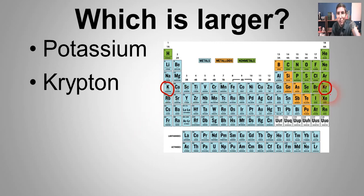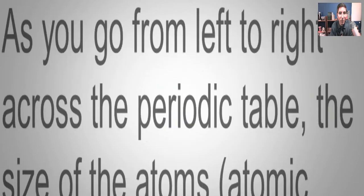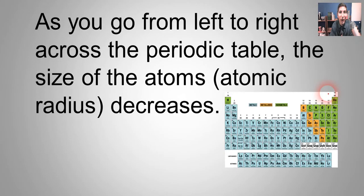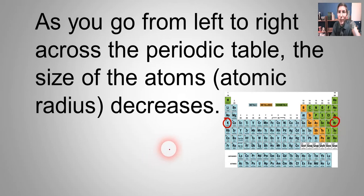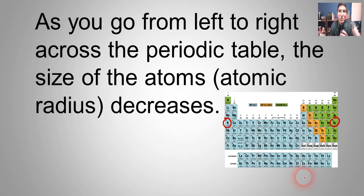That may seem the opposite of what we'd expect, but potassium is much larger than krypton. Now let's think about why that's the case. The trend does hold — as you go from left to right across the periodic table, the atomic radius actually gets smaller. Let's think about this in terms of energy levels rather than electrons. Potassium and krypton are both in period four, meaning they both have four energy levels. What's fundamentally different about them? It has to do with something we don't talk about too much in chemistry — the protons. Chemistry is mainly about electrons doing things, and the main job of protons is to keep the electrons from flying away.